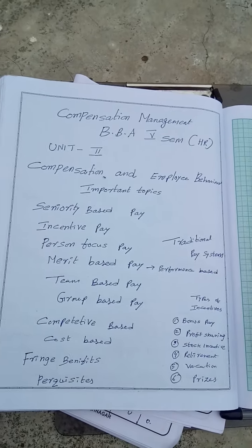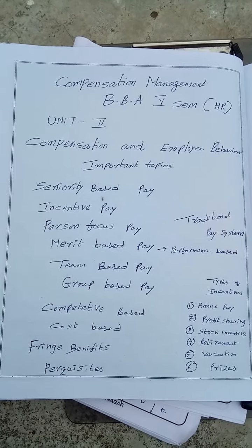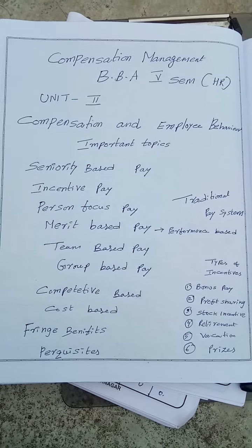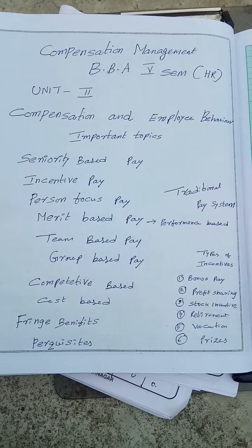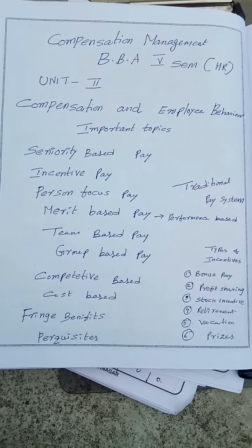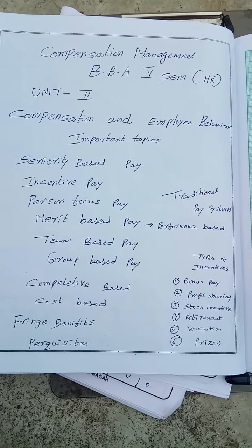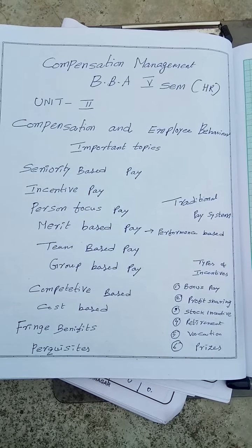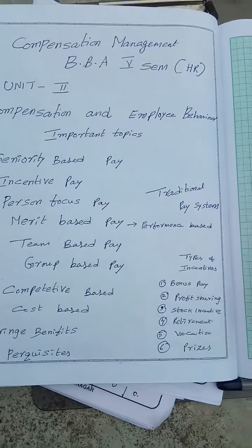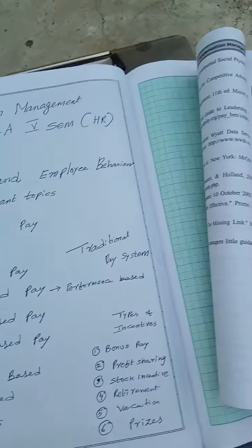Stock incentives mean if the shares of the company are listed on the stock exchange and quoting at high prices, employees will ask the company to allot shares at low prices. Companies like Infosys and Wipro also provide shares to employees. Retirement pay like pensions is also one of the incentives they may ask for. Vacation pay — because they are working very hard, in that vacation period also they may demand some kind of salary, allowances, and prizes. These are the incentives in every organization.